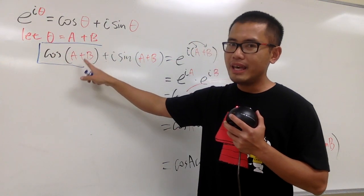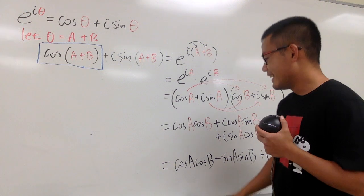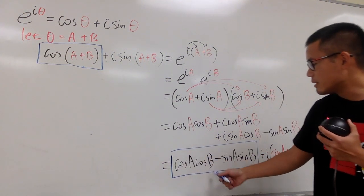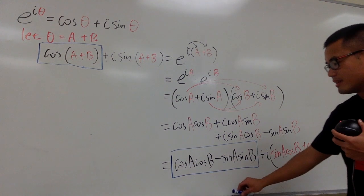Cosine of a plus b, right here. This is the same as this, isn't it? It must be the same as cosine a, cosine b, minus sine a, sine b.